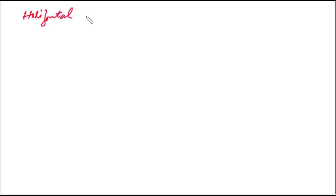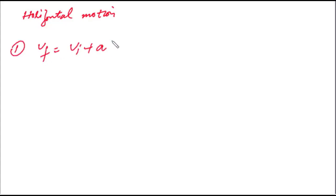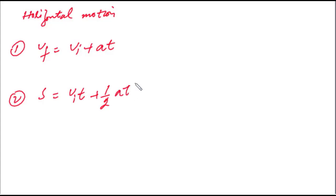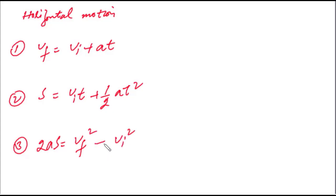یہ equations horizontal motion کے لئے استعمال ہوتی ہیں۔ فرض کریں کہ کوئی body horizontal direction میں move کر رہی ہے۔ اس کے لئے: vf = vi + at، دوسری equation: s = vi·t + ½at²، اور تیسری: 2as = vf² − vi²۔